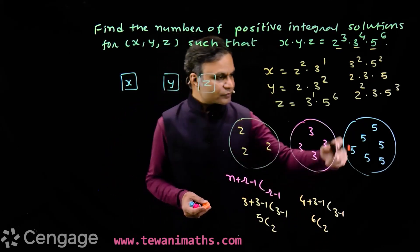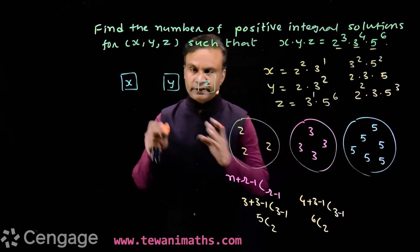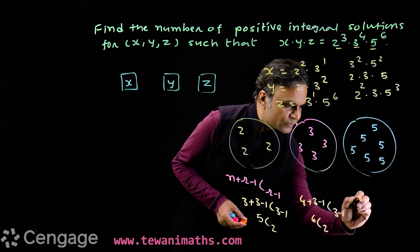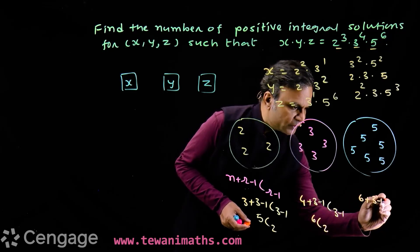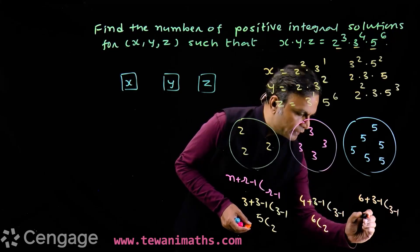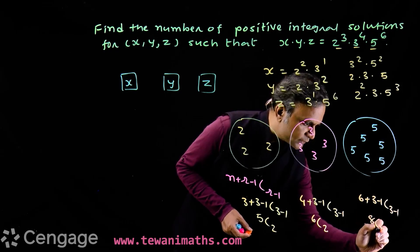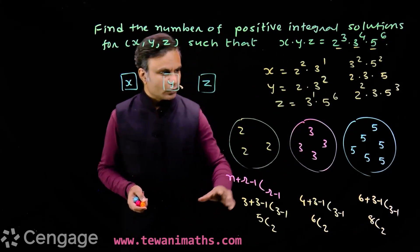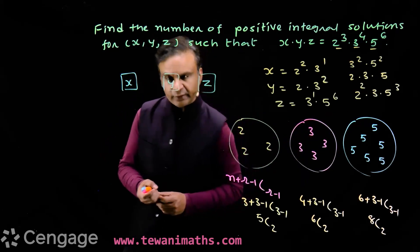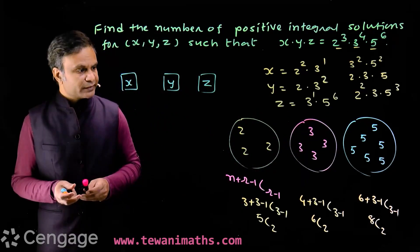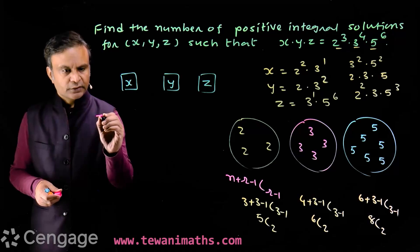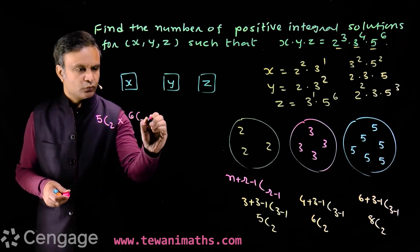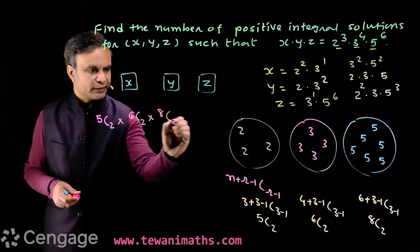For the six 5s, we can distribute into 3 distinct boxes in 6 + 3 − 1 C 3 − 1, which equals 8C2. So the total number of ways to distribute all these prime factors into 3 distinct boxes is 5C2 × 6C2 × 8C2.